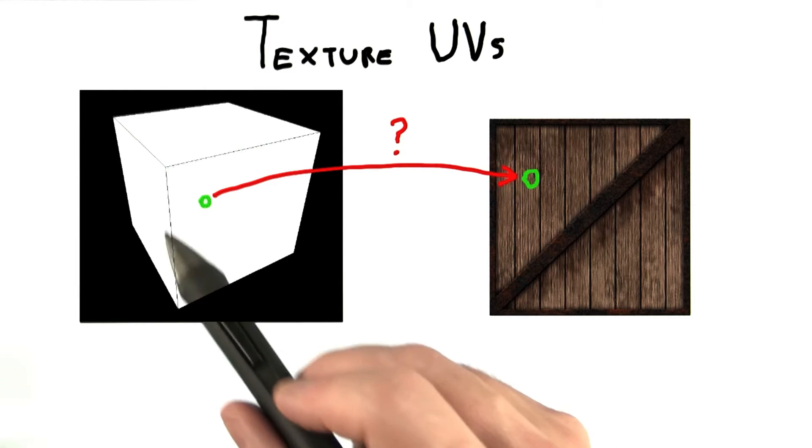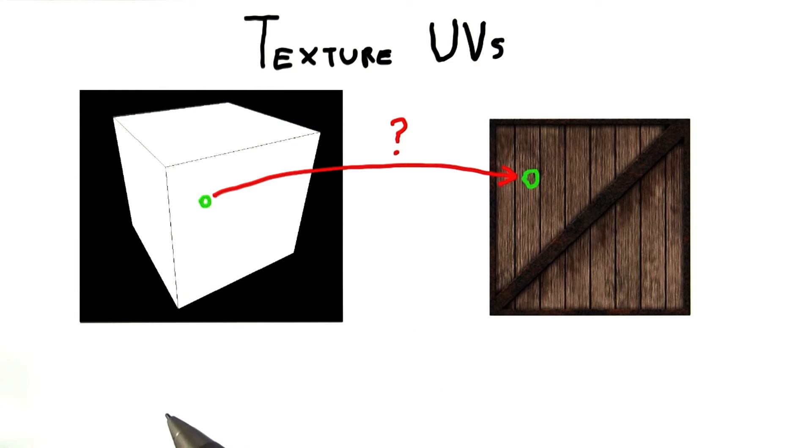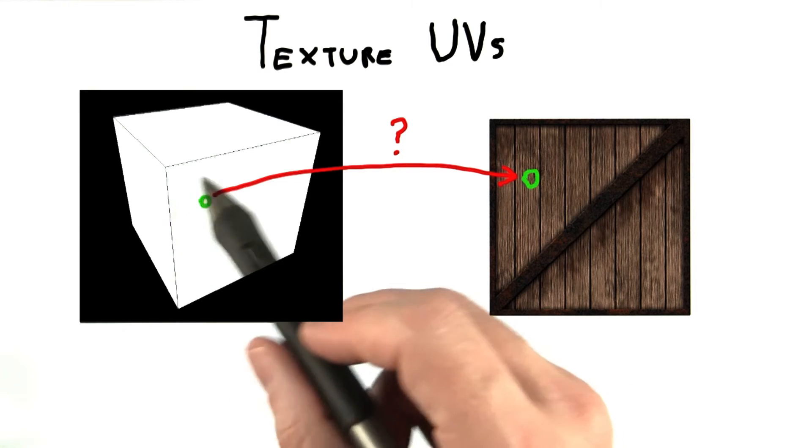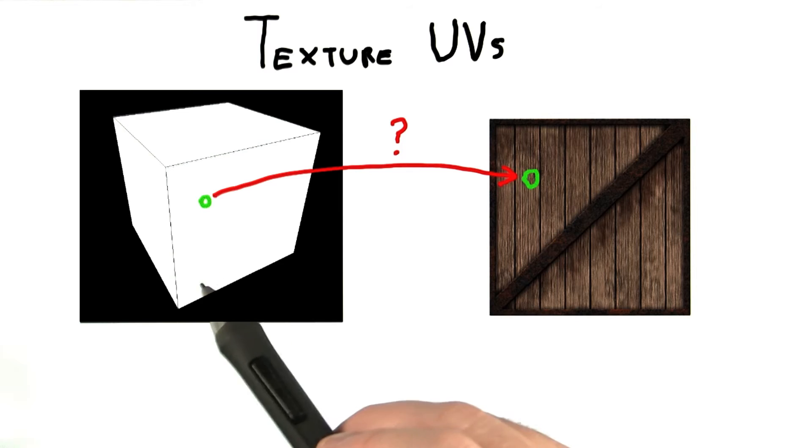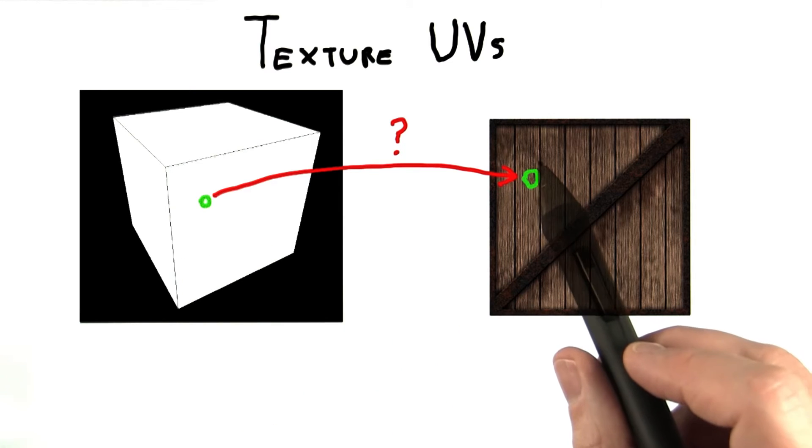Say we just try to use the location in the world as our input. This won't work well because our crate could be transformed with rotations and scalings. It might undergo an explosion that would change its shape. Any of these events would modify the world position on its surface, making it hard to get to the same pixel location on the image from frame to frame.